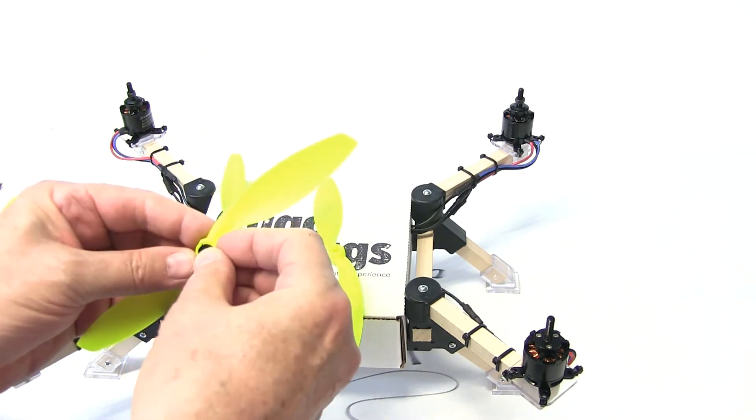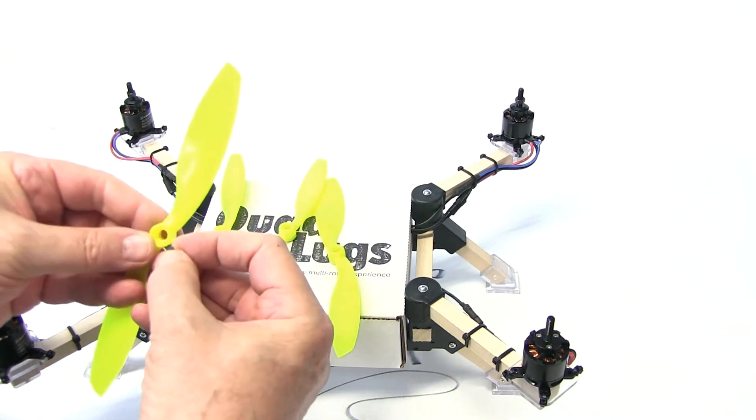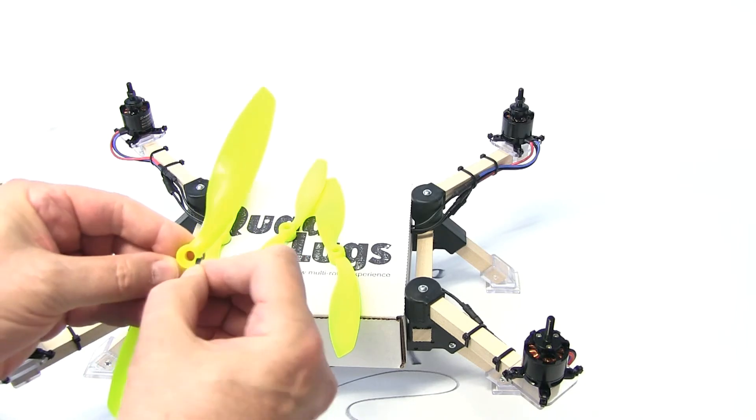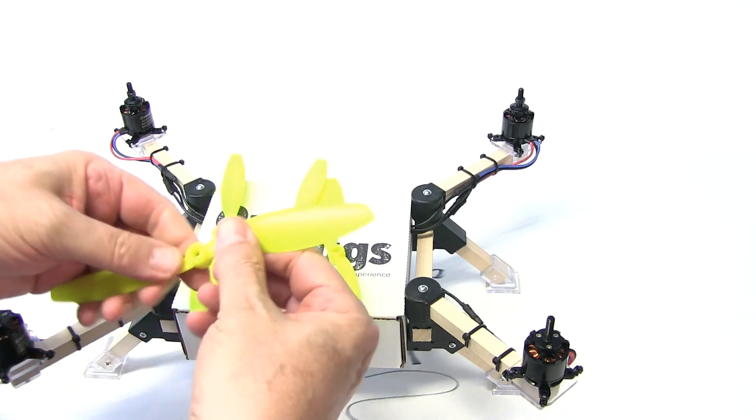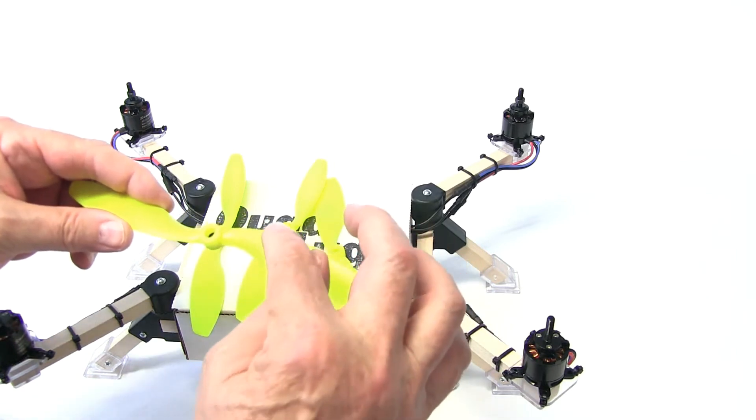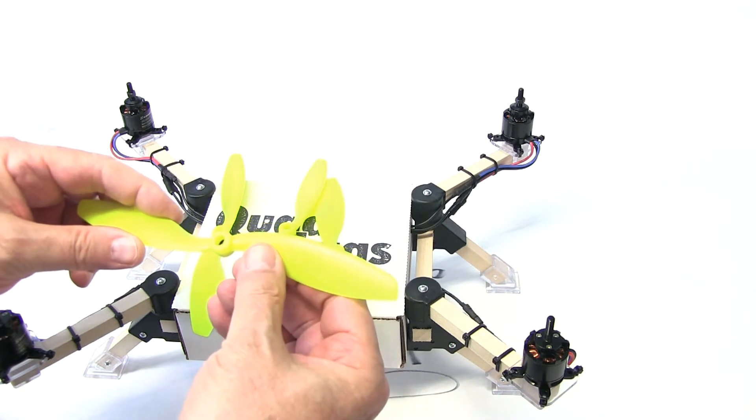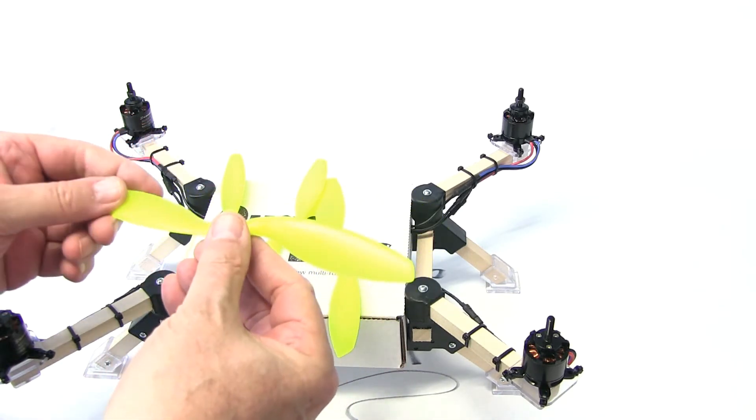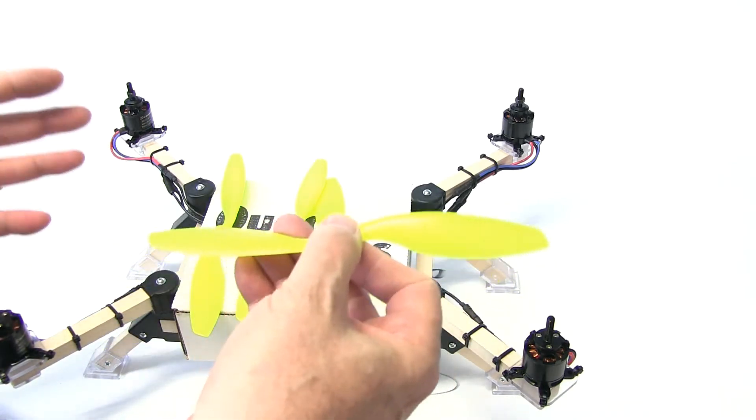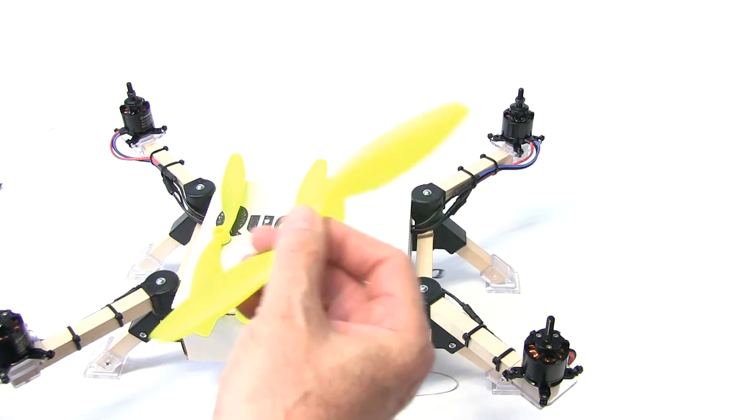We'll have a video coming out later on balancing the props. It's always good to balance the props. The props normally come and they'll have some imperfections. By balancing the props - we normally just put a piece of tape on one end to achieve that - they'll fly better. They'll fly good like this, but if you're filming, you'll get a little bit of vibration if the props aren't balanced properly. We'll go through that later.